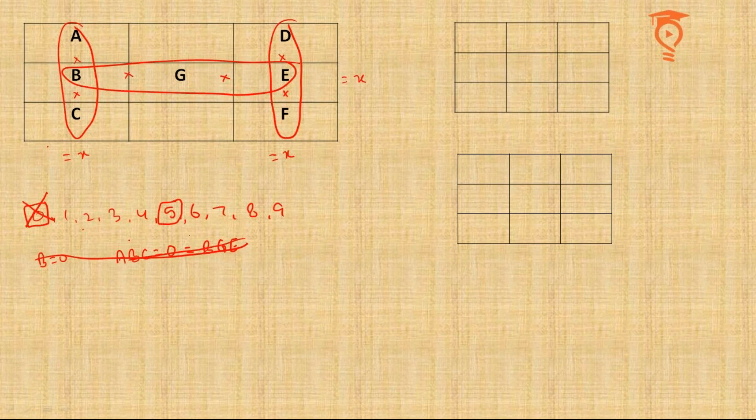On similar thinking lines, next I would come to another prime number, 5. Imagine if 5 is one of the letters. Then suppose again B is 5, then ABC will be a multiple of 5 and BGE will be a multiple of 5.